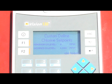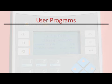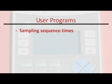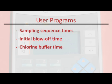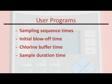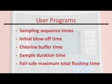Once the minimal and desired levels have been set, the user would program sampling sequence times when the unit will test residual levels. Additionally, the user would program an initial blow-off time, a chlorine buffer time which eliminates any possible errant readings, a sampling duration time — the length of time the unit will sample if above the minimum level — and a fail-safe maximum total flushing time.